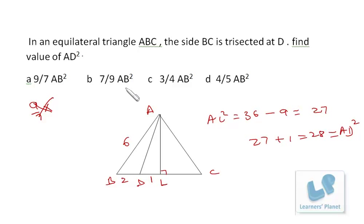So AD square is 28, that you are getting in this option. So that's pretty simple. If you assume comfortable values of the side, it will be very easy for you to solve.